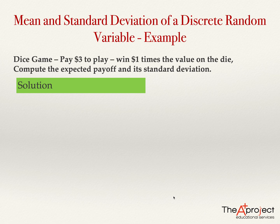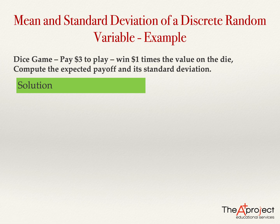Imagine that we have a dice game. You pay three dollars to play and then you win one dollar times the value on the die. That means if you obtain number six, you get six dollars. Your payoff will be six minus three, only three dollars. If you obtain number five, your payoff will be five minus three, two dollars.